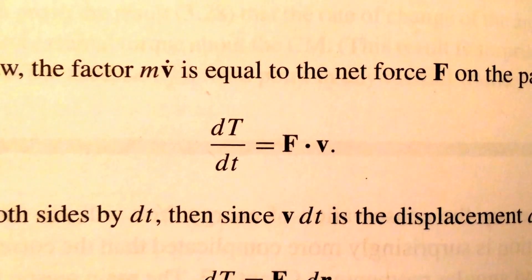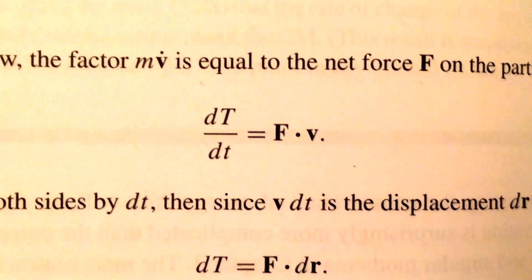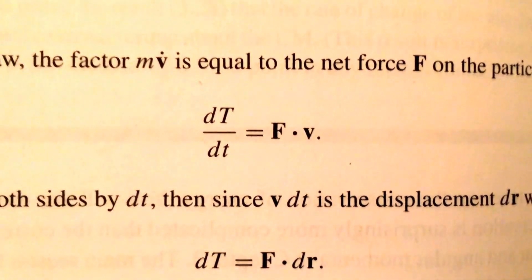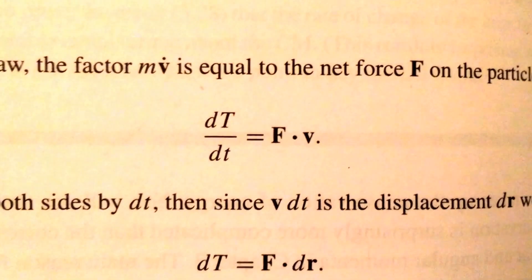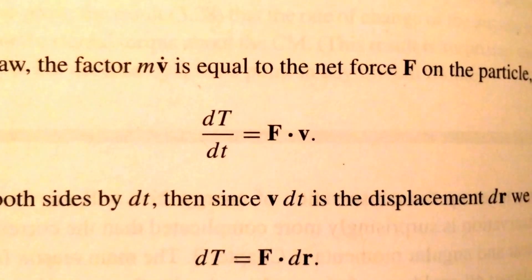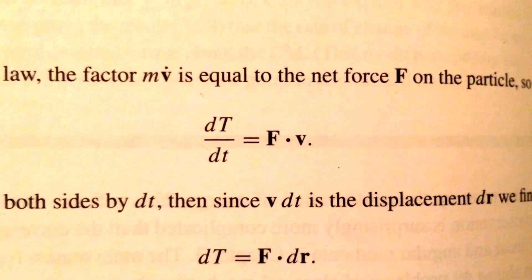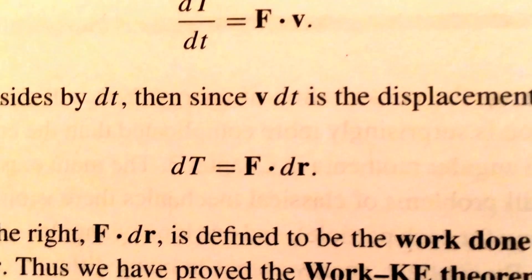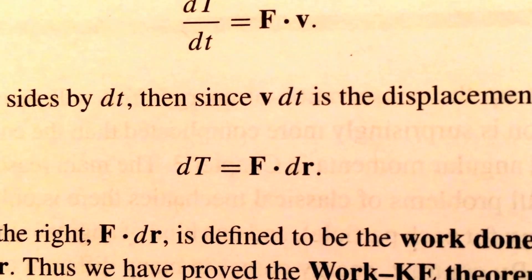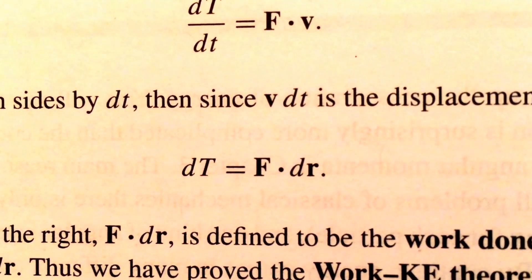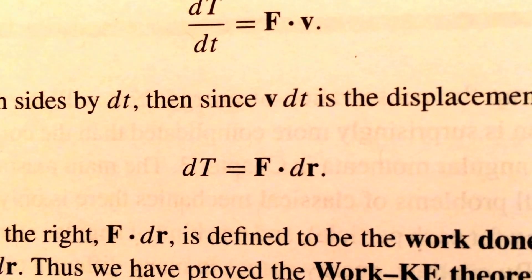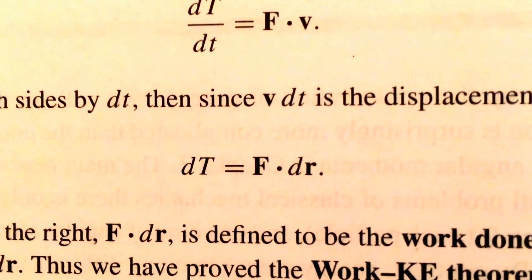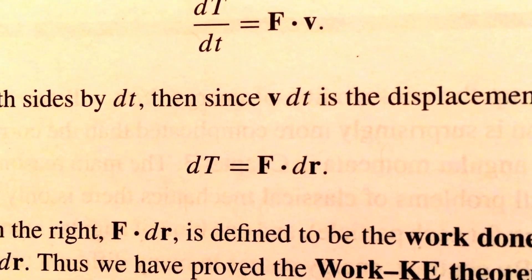The acceleration times the mass is just a force, so the time derivative of the kinetic energy is equal to the force vector applied to that particle dotted into the particle's velocity vector. In differential form, a tiny change in the kinetic energy of the particle is equal to the forces applied to that particle — the vector form of those forces — dotted into a tiny amount of displacement for the particle as it travels along its trajectory.